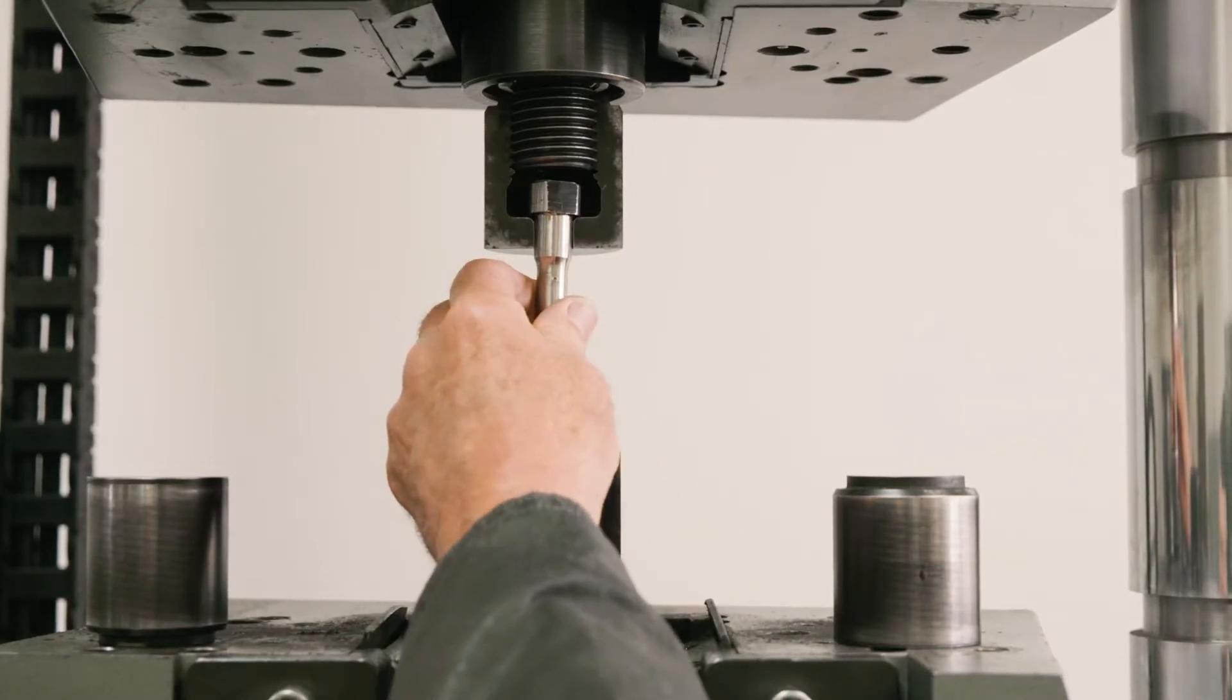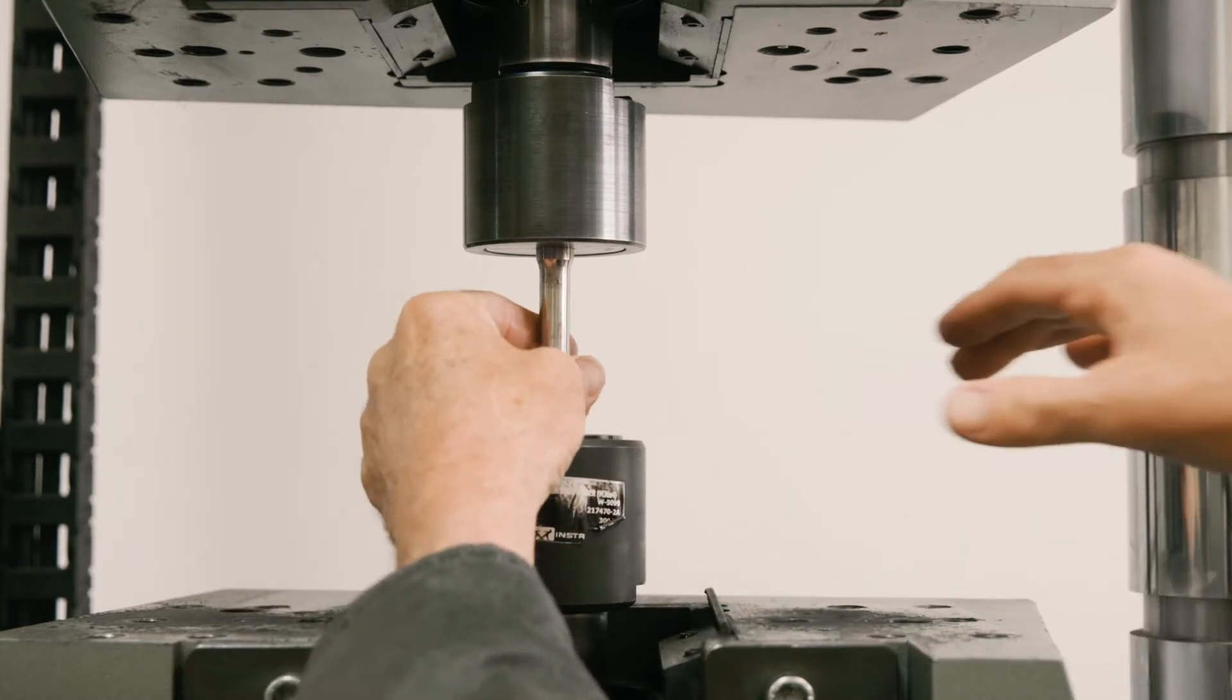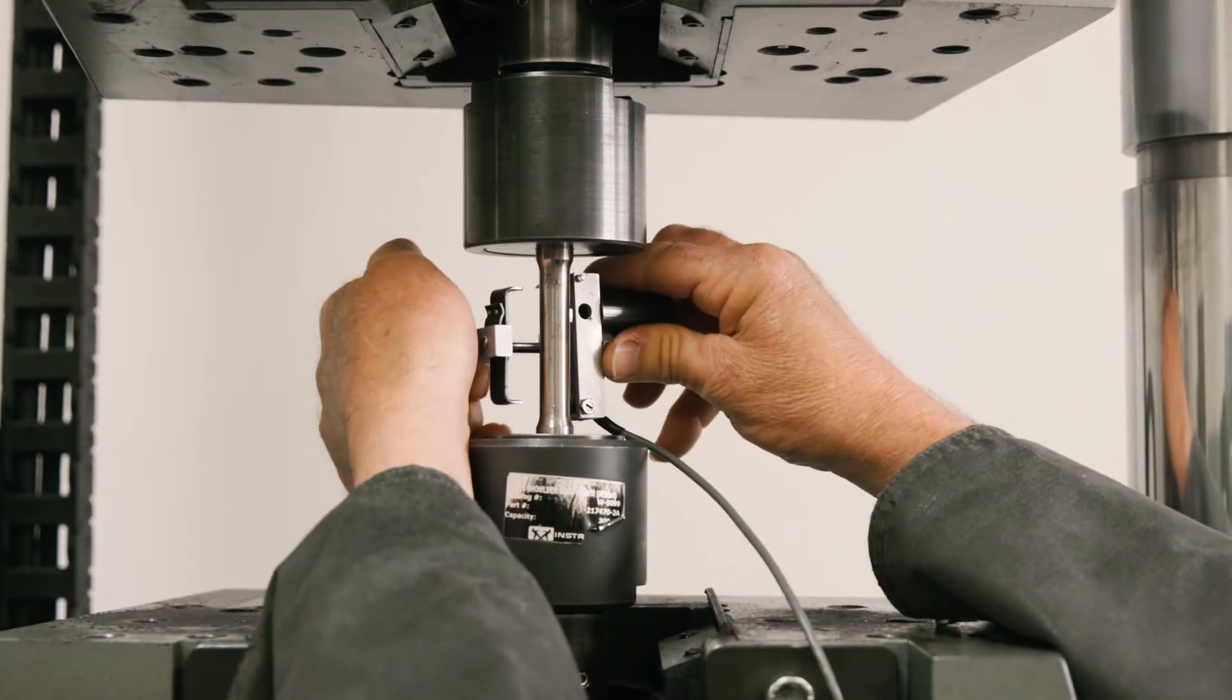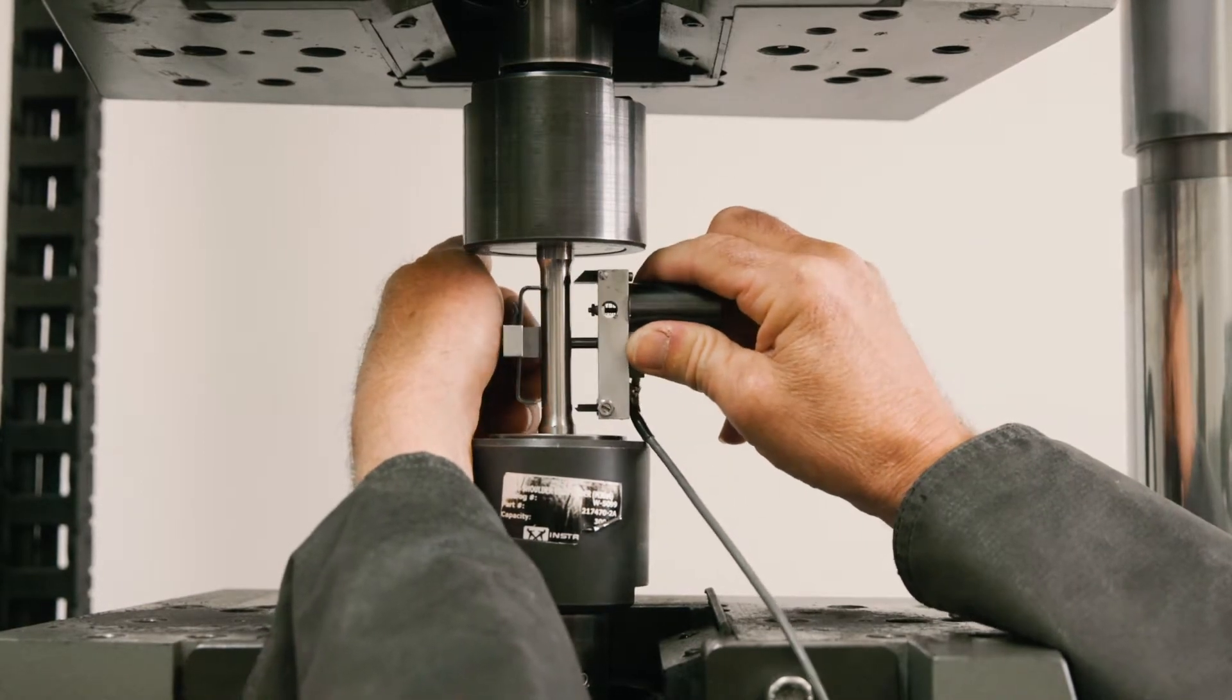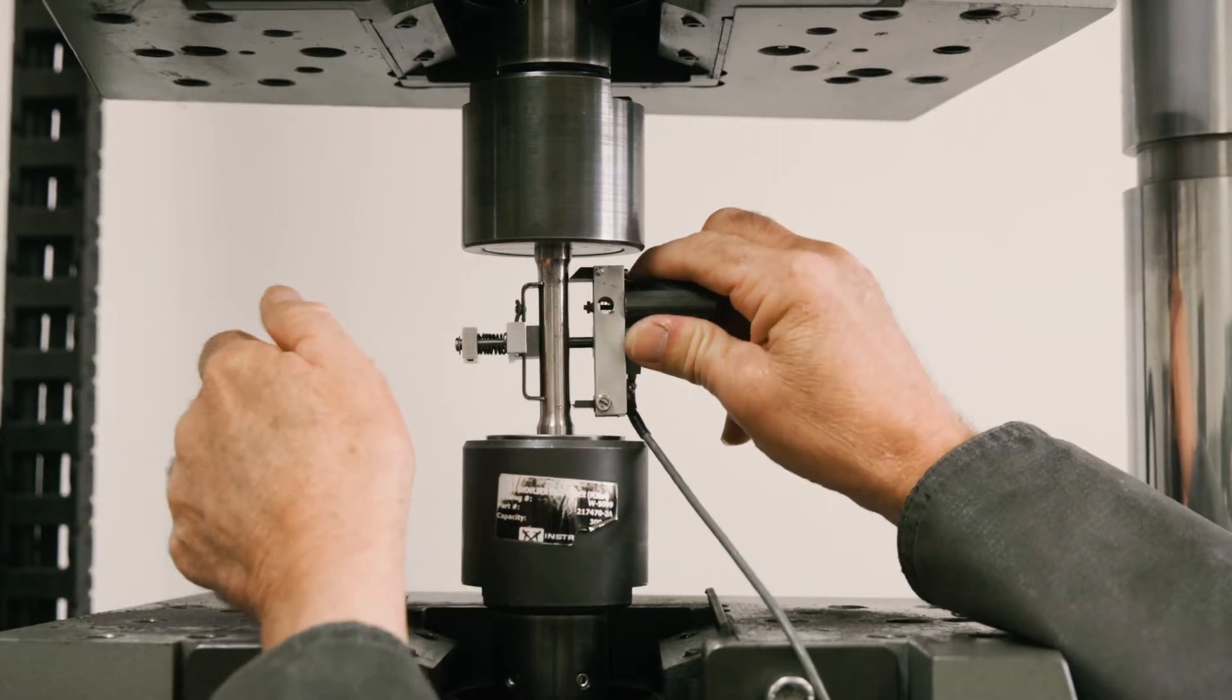The specimen is then loaded into the testing machine and secured by a split collar. Next, the extensometer is connected. The extensometer measures the strain on the sample up to the yield point and is helpful to most accurately determine the yield strength of the material.